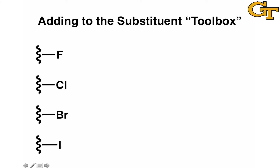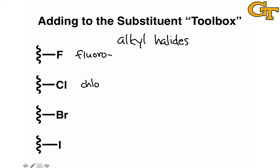Let's talk about adding to the substituent toolbox in the context of the alkyl halides. Alkyl halides contain a halogen atom bound to an sp3 hybridized carbon. The four halogens you find in alkyl halides are fluorine, chlorine, bromine, and iodine. These substituents are named by taking the 'ene' out of the name of the element and replacing it with 'o.' So F is the fluoro substituent, Cl is the chloro substituent, Br is the bromo substituent, and I is the iodo substituent. Aside from these new names, there's pretty much nothing new about naming alkyl halides — we treat them just like alkanes.